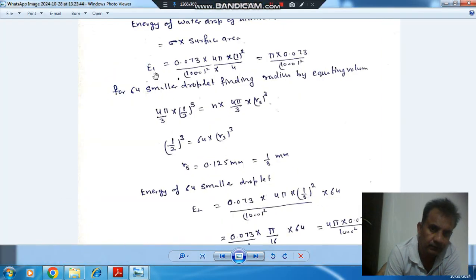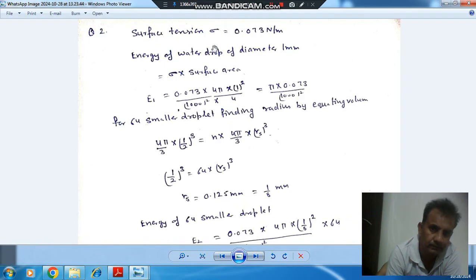It is given that the surface tension of water in air is 0.073 N/m, and the diameter of the initial water drop is 1 mm.